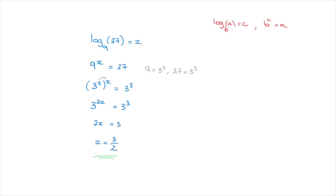In other words, log base 9 of 27 is equal to 3 over 2, which we can write in exponential form as 9 to the power of 3 over 2 equals 27. And we're done.